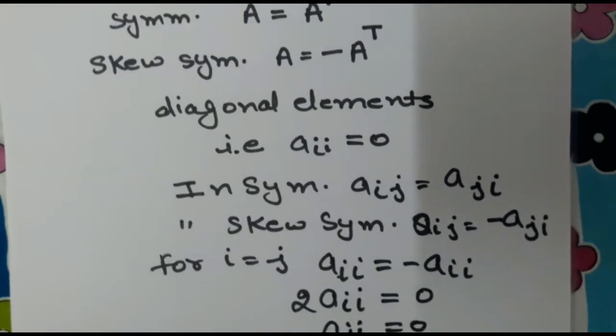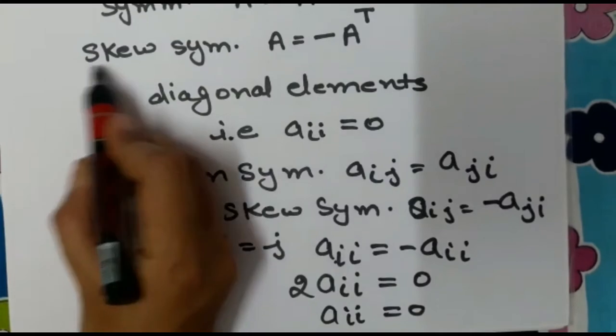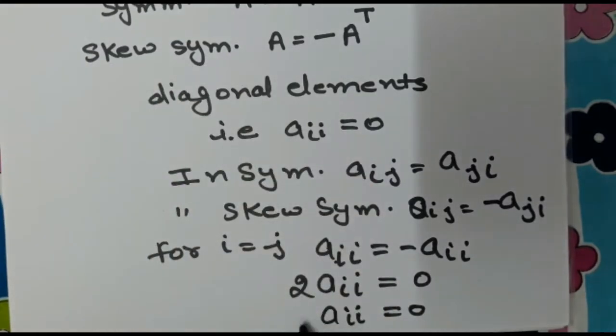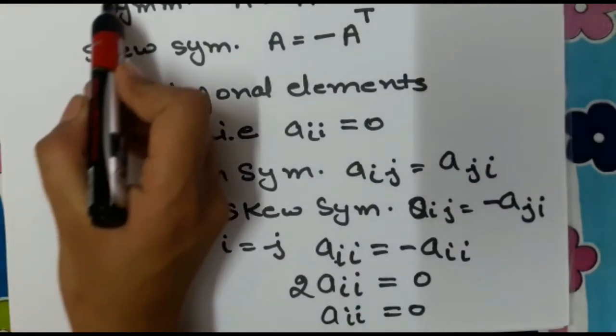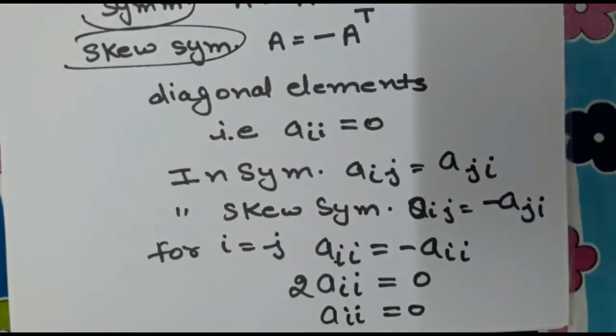What does this imply? It means all the diagonal elements of a skew symmetric matrix are 0. This is about symmetric and skew symmetric matrix.